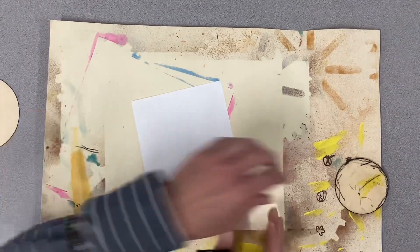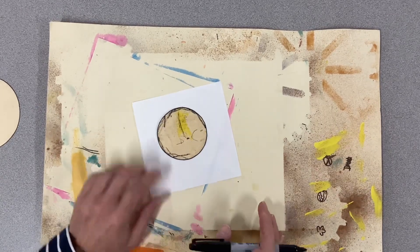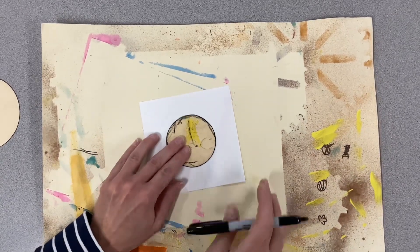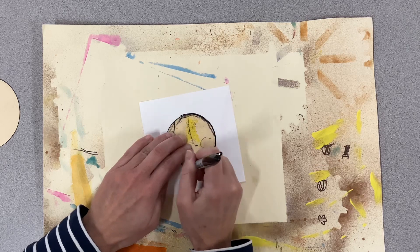Get ready to start our kindness creature. You're going to take your circle, place it in the center of your square paper, with your helper hand hold it and trace around.